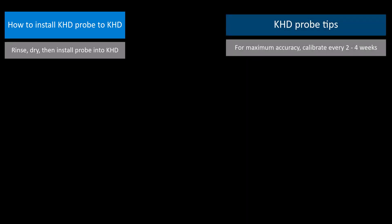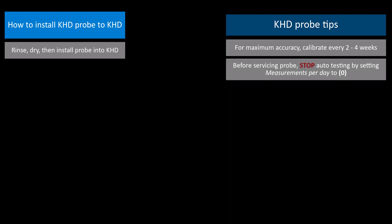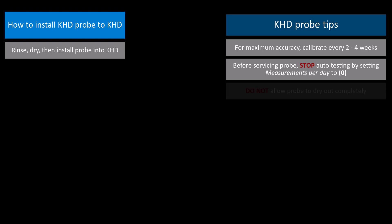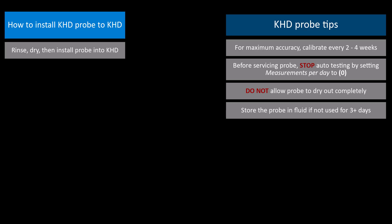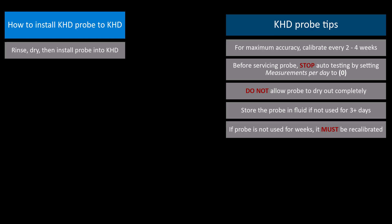To get the highest accuracy out of your KHD, we recommend you calibrate the probe every two to four weeks. Anytime you need to service the probe either to calibrate or replace, make sure you stop automatic KHD testing by temporarily setting the measurements per day to zero. It's also important to note the KHD probe must never be allowed to dry out. If your KHD Director does not perform any tests for more than three days, we recommend removing the probe and storing it in liquid until you are ready to use it again. The KHD will always store a small amount of water inside the measuring cell to prevent the probe from drying out. With each test, this fluid is flushed out and replaced with new water. Lastly, a probe that has not been in use for more than a few weeks should always be recalibrated before being put to use.